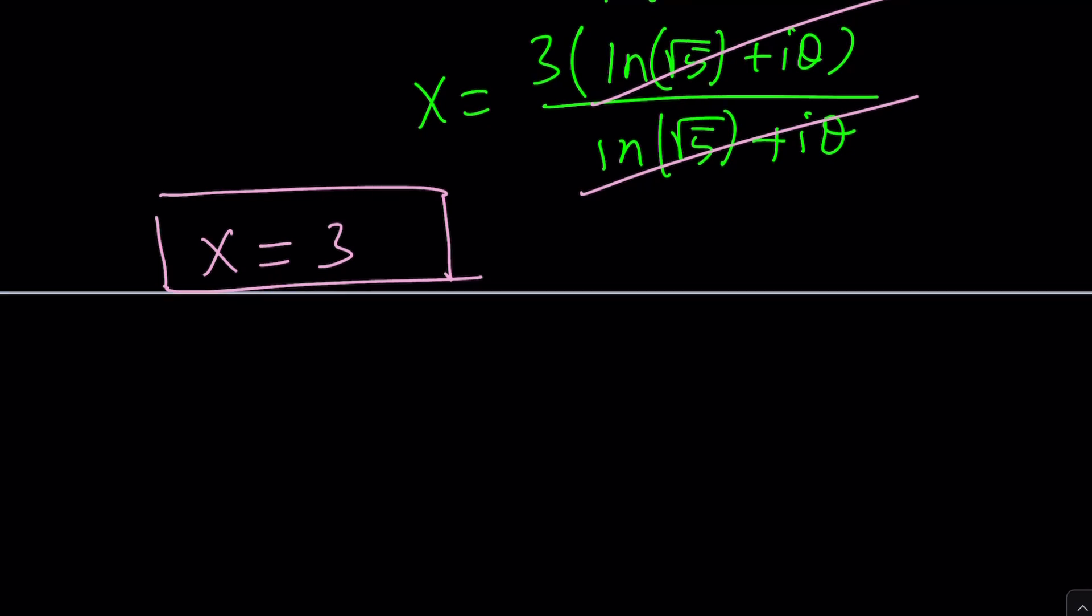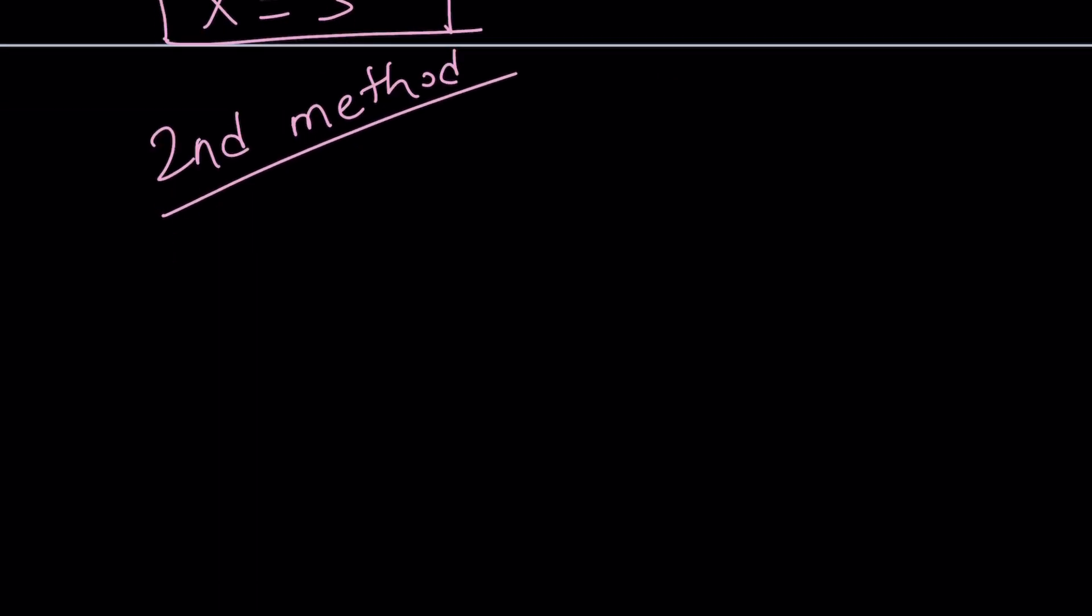Now, why did x equals 3 work? Let's go ahead and take a look and that brings us to the second method. So we have our numbers, right? What were the numbers? We have 2+i. We raise it to the power x and that gives us 2+11i, right? Okay. Awesome. So now, here's the thing.